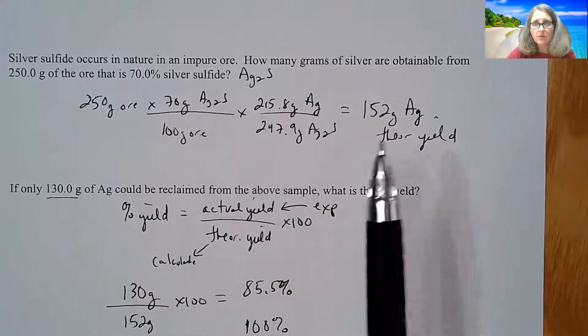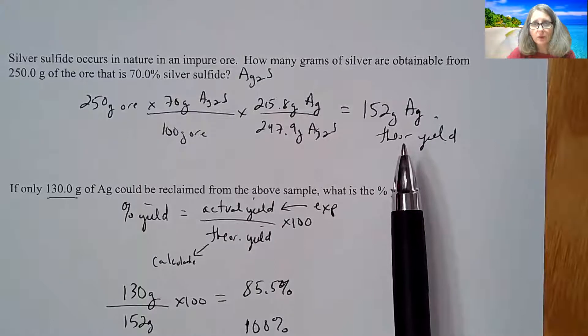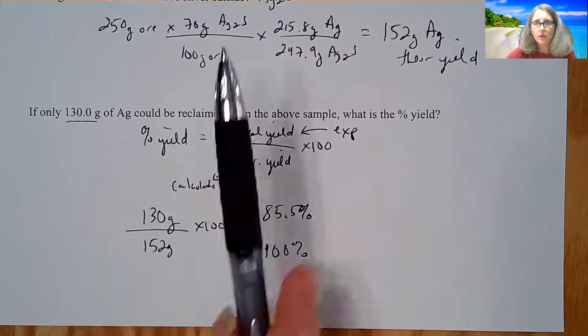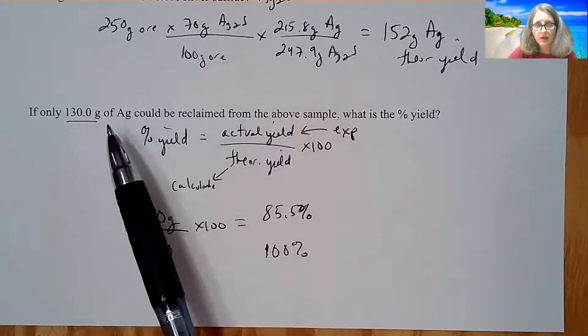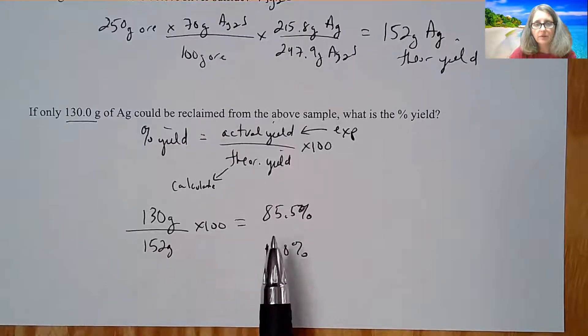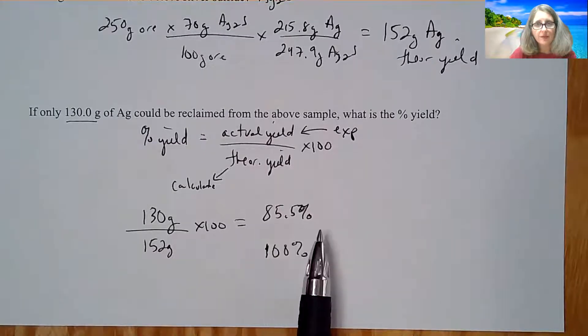If everything went perfectly, that's how much I should have gotten out of this ore. But that's your theoretical yield. So that's always something you're going to calculate one way or the other. Then you might be given some experimental data or they did the experiment and here's how much they actually got.